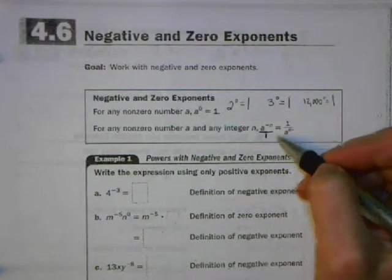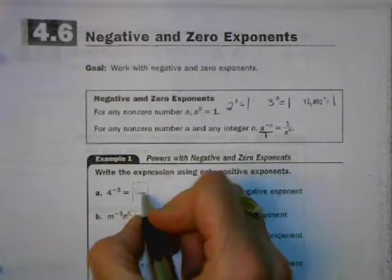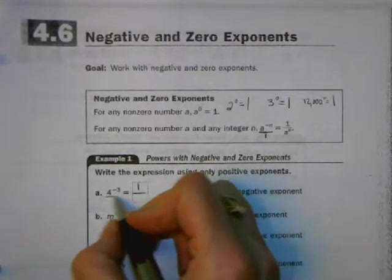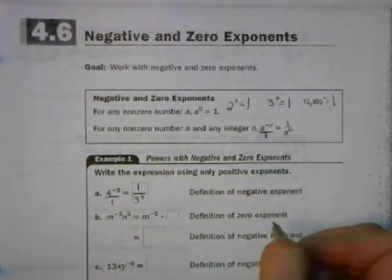So let's do this with a little bit of actual numbers here. 4 to the negative 3rd power is the same as 4 to the negative 3rd power on the top, is the same as 4 to the positive 3rd power on the bottom.